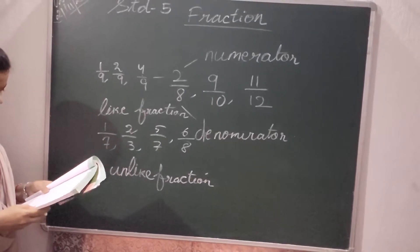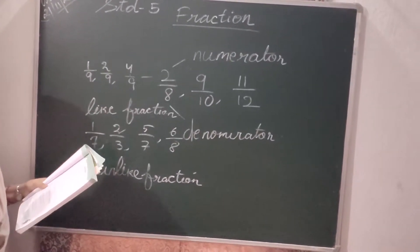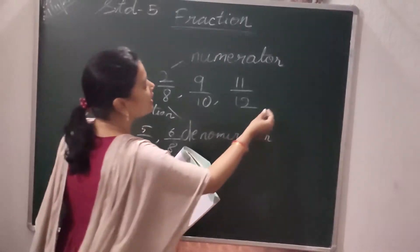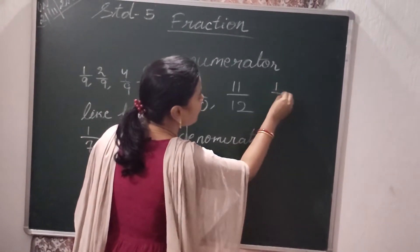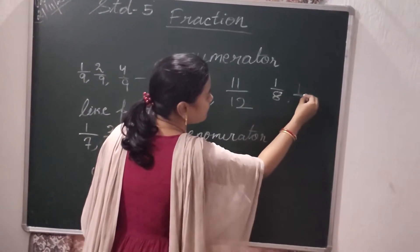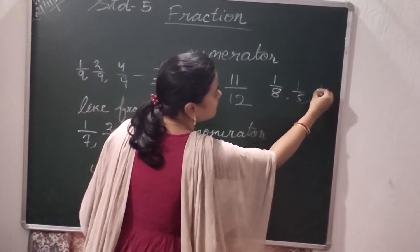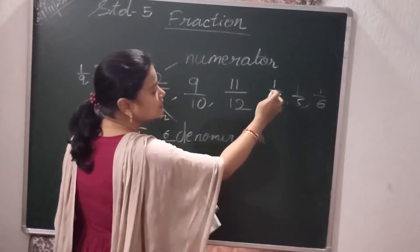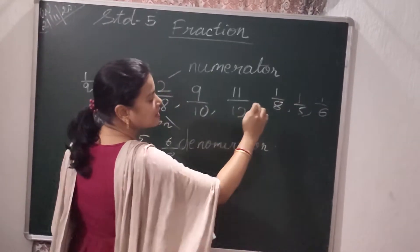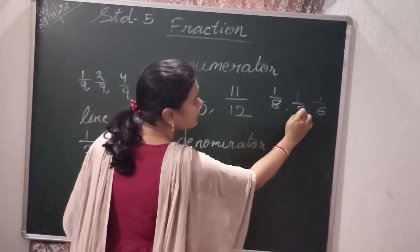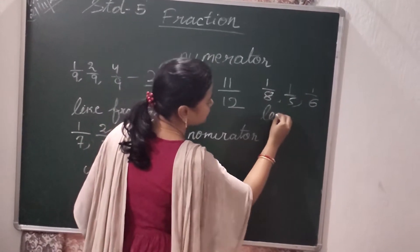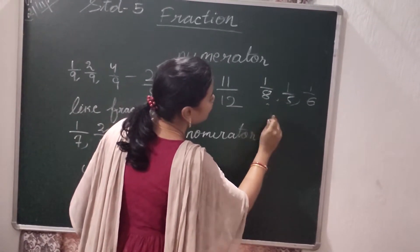Then the unit fraction. Which fractions are called unit fractions? Fractions like 1 by 8, 1 by 5, 1 by 6 — where the numerator is 1. In each case the numerator is 1, so these fractions are called unit fractions.